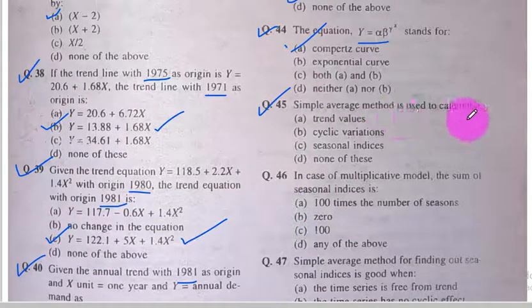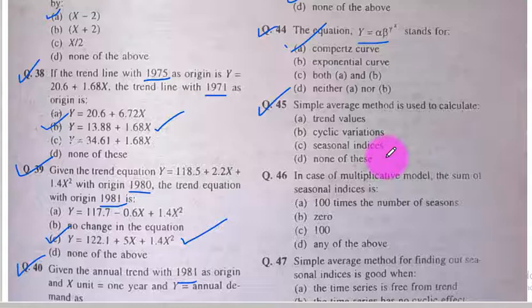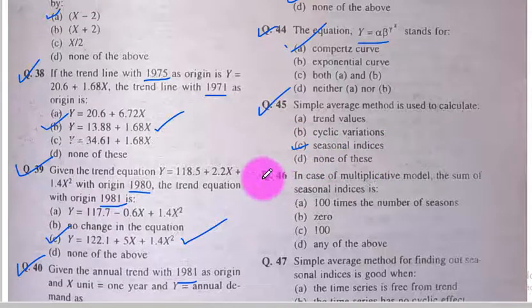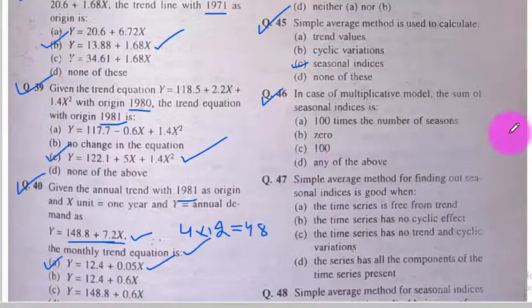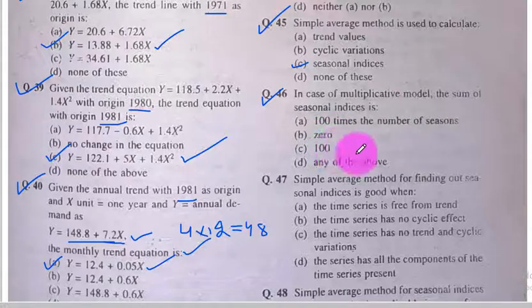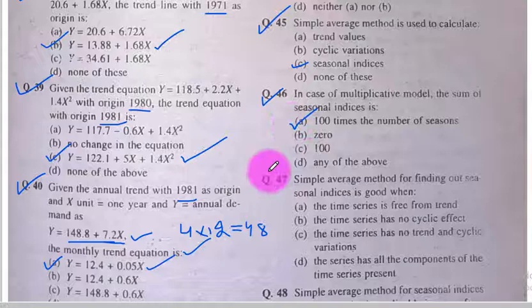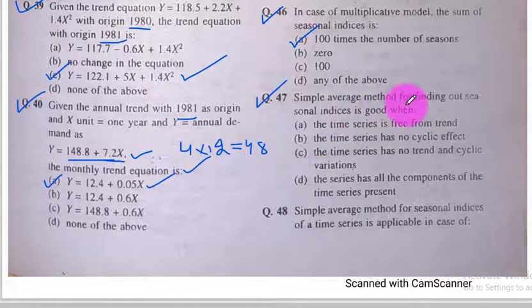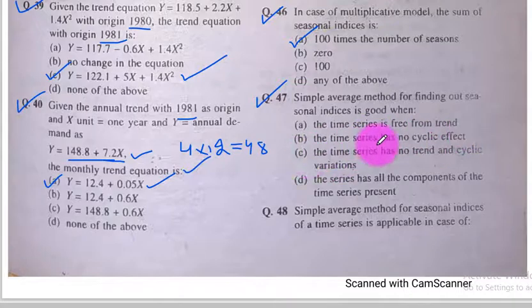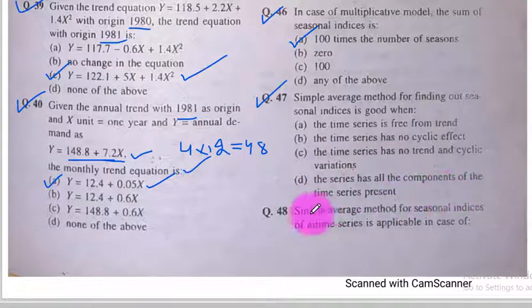Question number 45. Simple average method is used to calculate seasonal indices — option C is the correct option. Question number 46. In case of the multiplicative model, the sum of seasonal indices is 100 times the number of seasons — option A is the correct option. Question number 47. Simple average method for finding out seasonal indices is good when the time series has no trend and no cyclic variations — option C is the correct option.